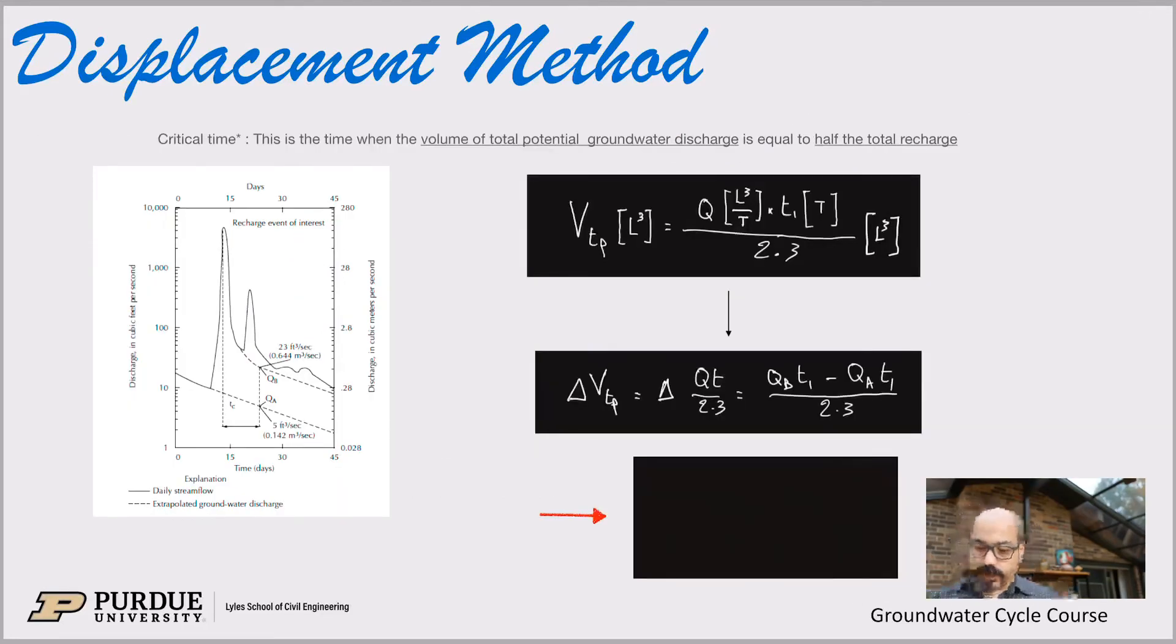Okay, where is that equation coming from? So the critical time, I said I would define it. That's the time when the volume of the total potential groundwater discharge equals half of the total discharge. So at this time we have half the volume, basically, that is remaining. So it's half.